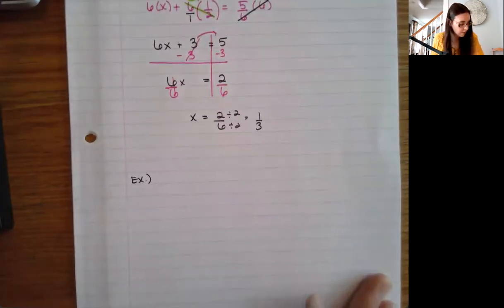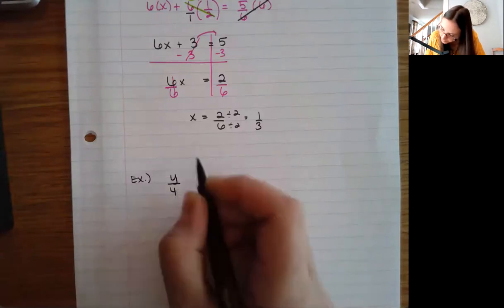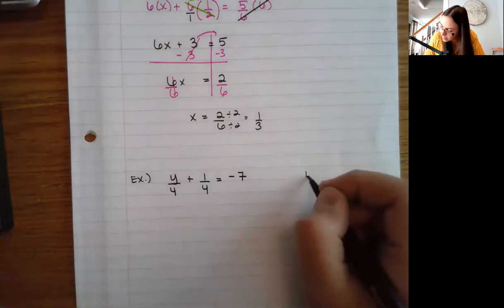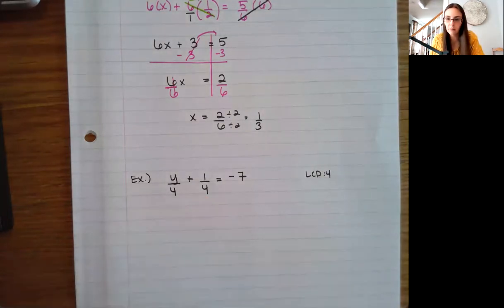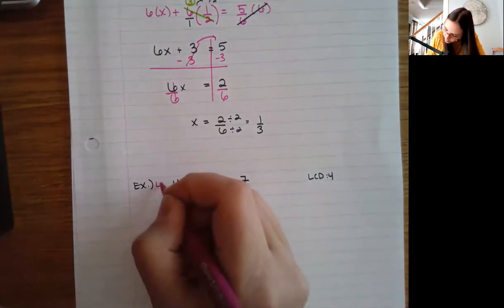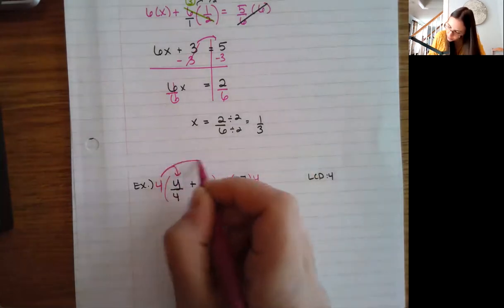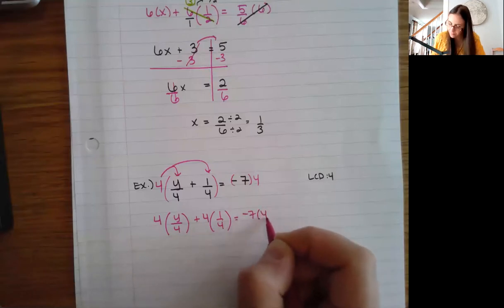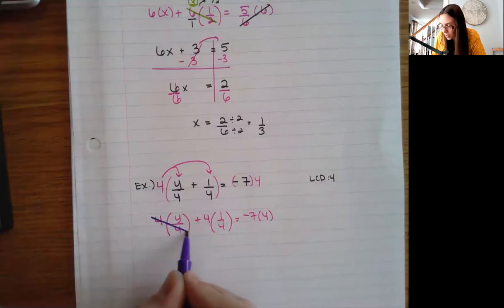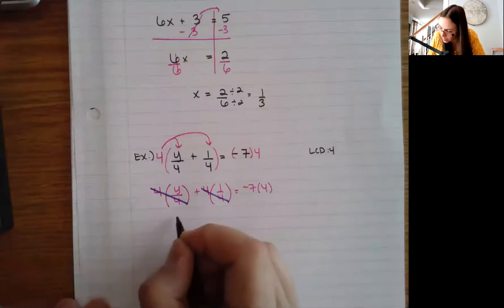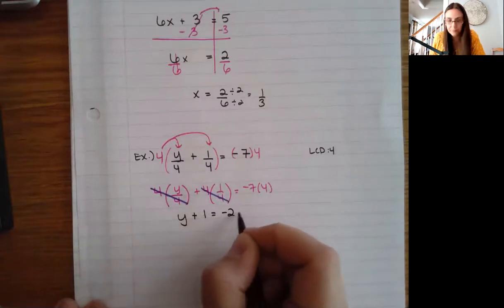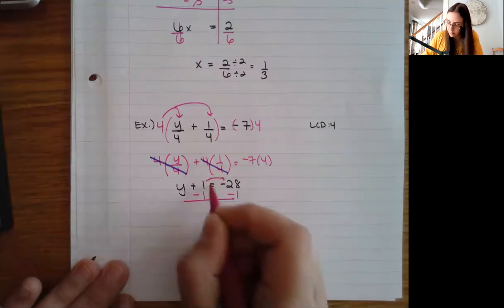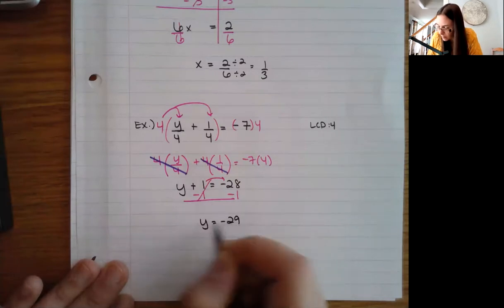Let's do another example: y/4 + 1/4 = -7. My LCD here is just four — even though four is repeated twice, I only need to use four. I multiply both sides by four. Since I have addition, I distribute: four times y/4 plus four times one fourth equals negative seven times four. The fours cancel, leaving y + 1 = -28. I subtract one from both sides and get y = -29.